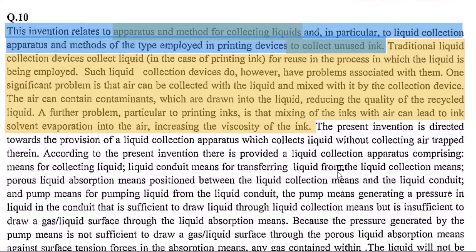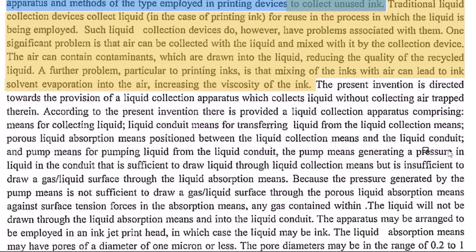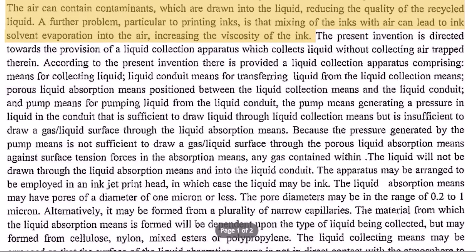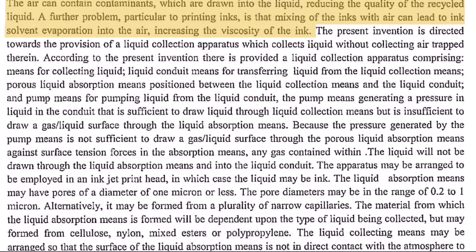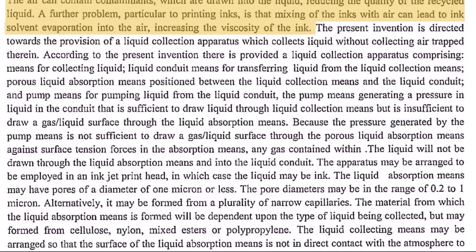Moving on to the next section, which is the summary of the invention. The way to identify this is to look for paragraphs in the question that talk straightforwardly about the invention — about the apparatus, about the method — without going into too much implementation detail, not dimensional or component details, but what components are provided to achieve a purpose or what method steps lead to the end objective.